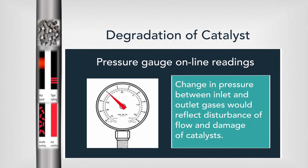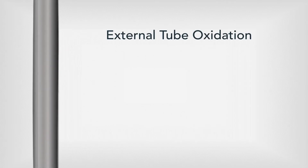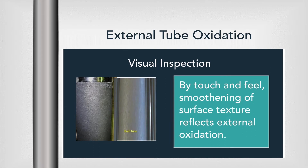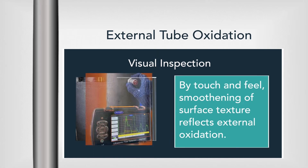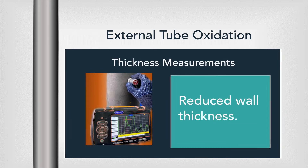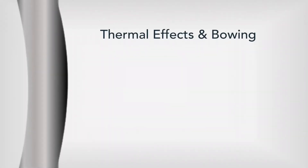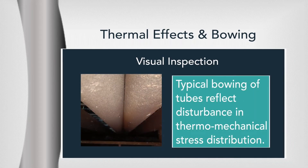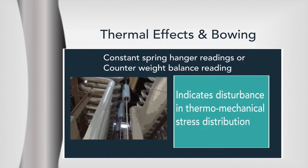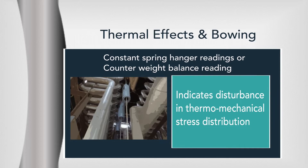External tube oxidation can be detected through visual inspection and thickness measurements. Thermal effects and bowing can be detected through visual inspection and constant spring hanger readings or counterweight balance readings.